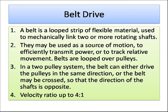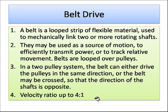A belt is a looped strip of flexible material used to mechanically link two or more rotating shafts. It may be used to efficiently transmit power or to track relative movement. Belts are looped over pulleys. In a two-pulley system, the belt can drive both pulleys in the same direction — called an open belt drive — or the belt may be crossed so the shafts rotate in opposite directions, called a cross belt drive. A velocity ratio of up to 4:1 can be used in a belt drive.